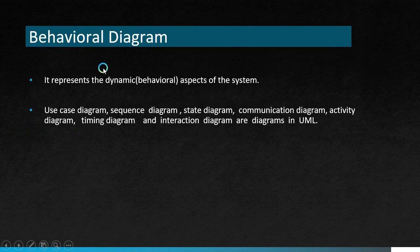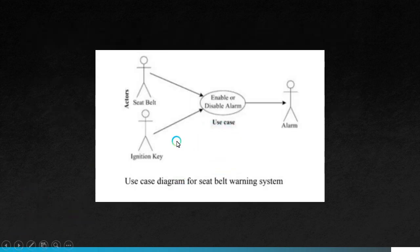Behavioral diagrams represent the behavioral aspect of the system. They include use case diagram, sequence diagram, state diagram, communication diagram, activity diagram, timing diagram, and interaction diagram. A simple example is a use case diagram for a warning system, where users are known as actors. Two actors are seatbelt and ignition key — when ignition is off, disable the alarm; when ignition is on and seatbelt is on, disable the alarm; when ignition is on and seatbelt is off, enable the alarm.